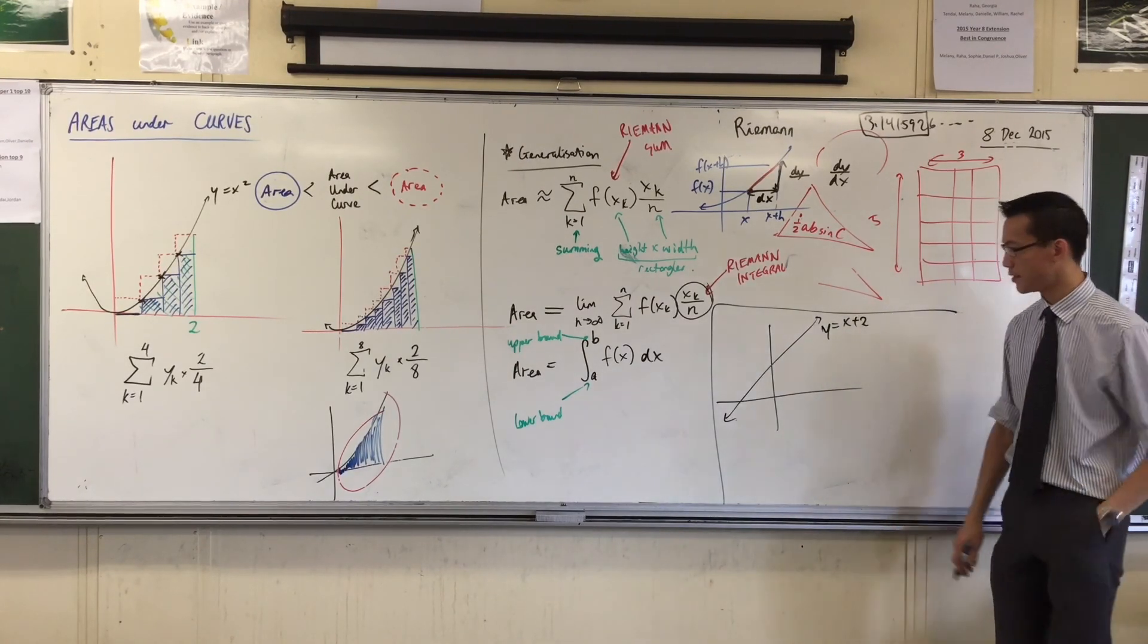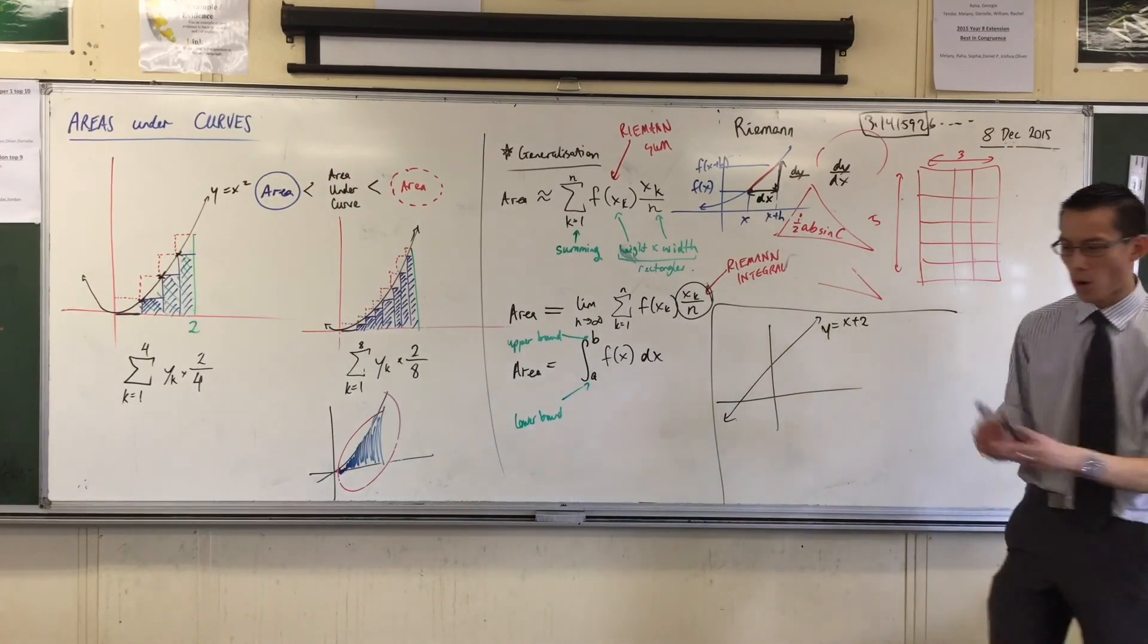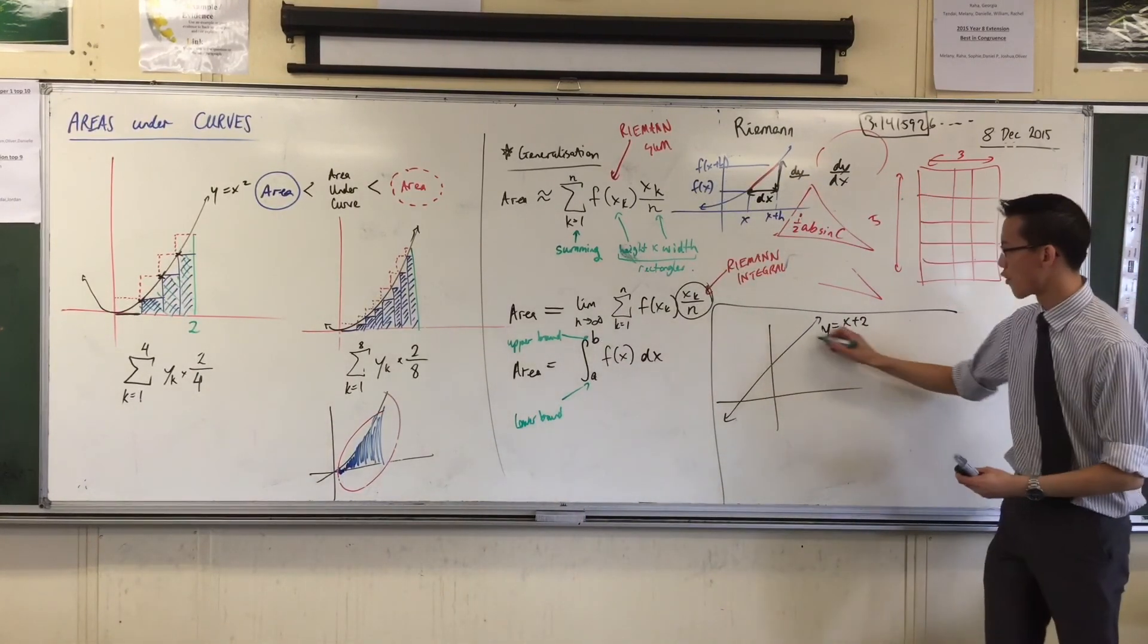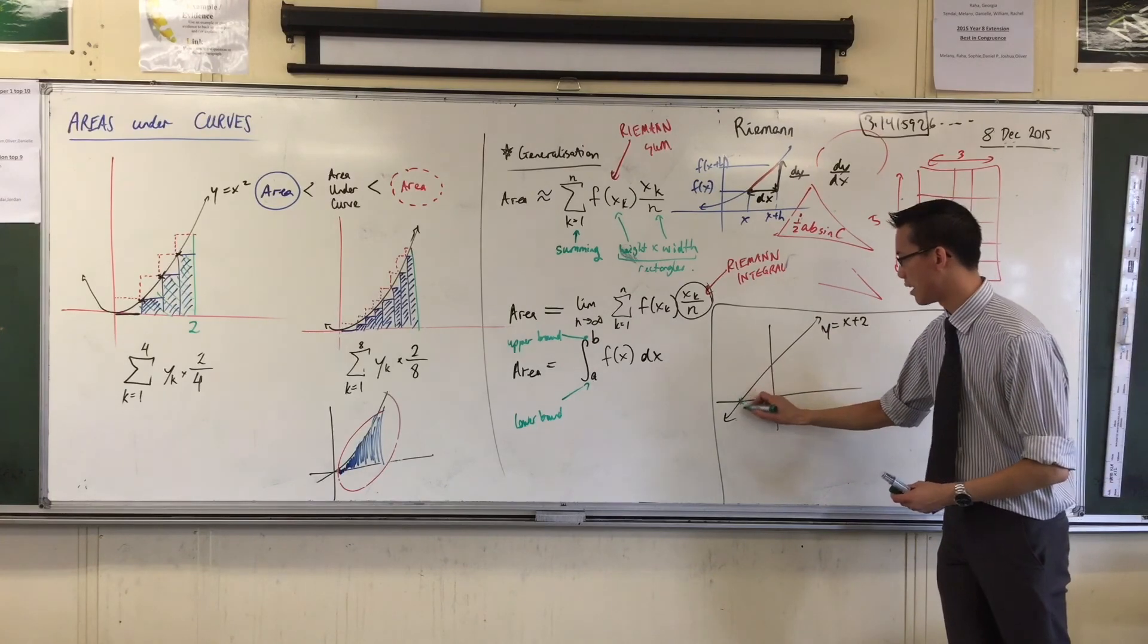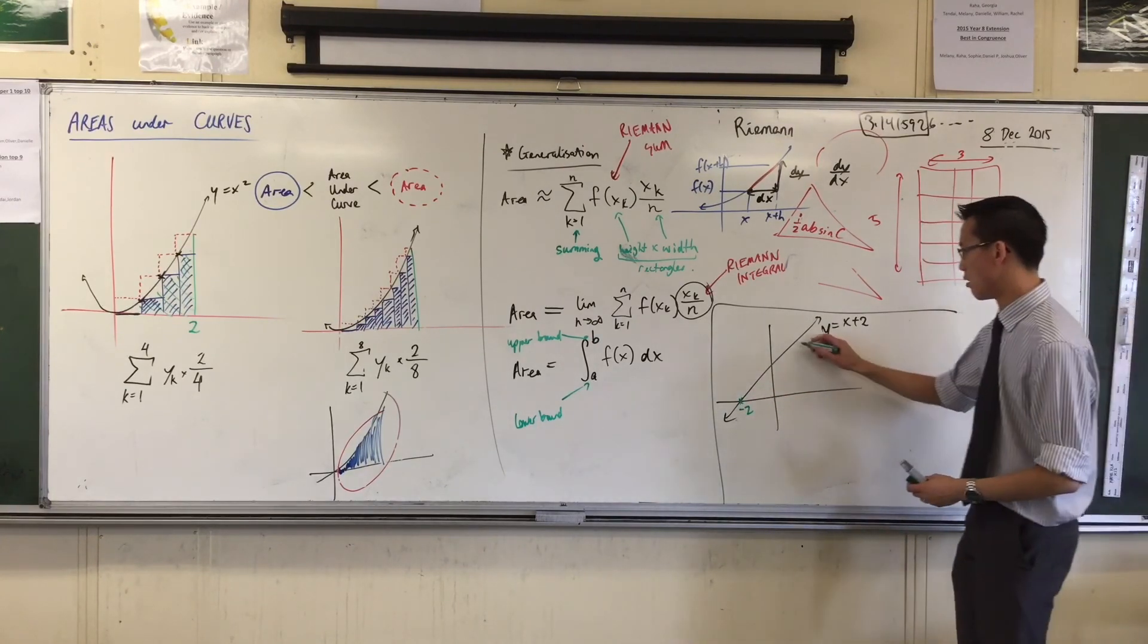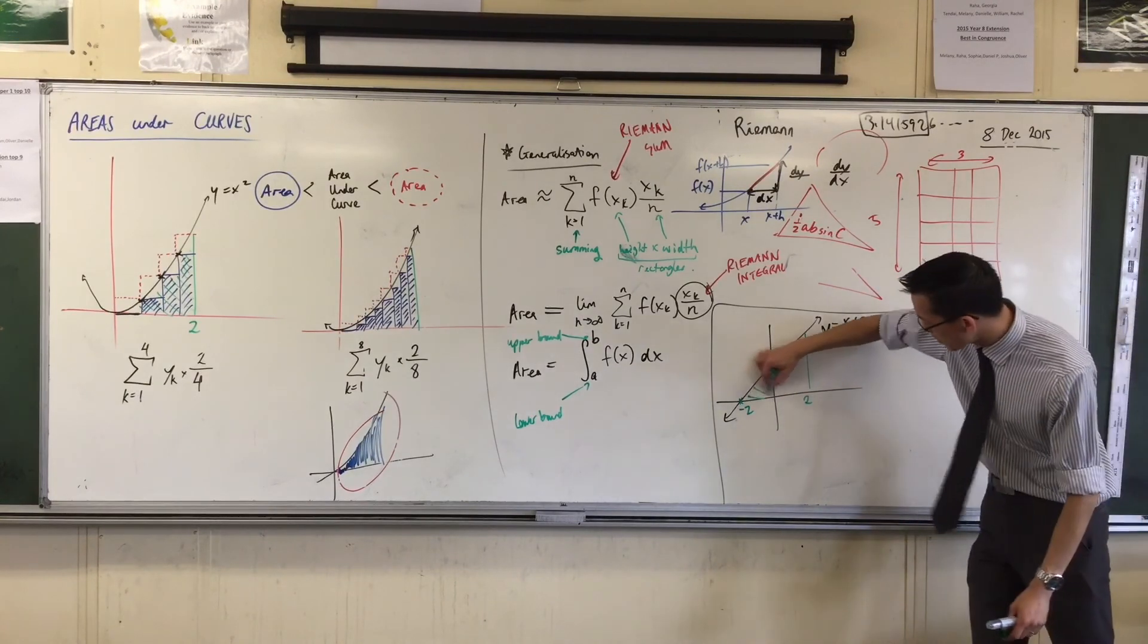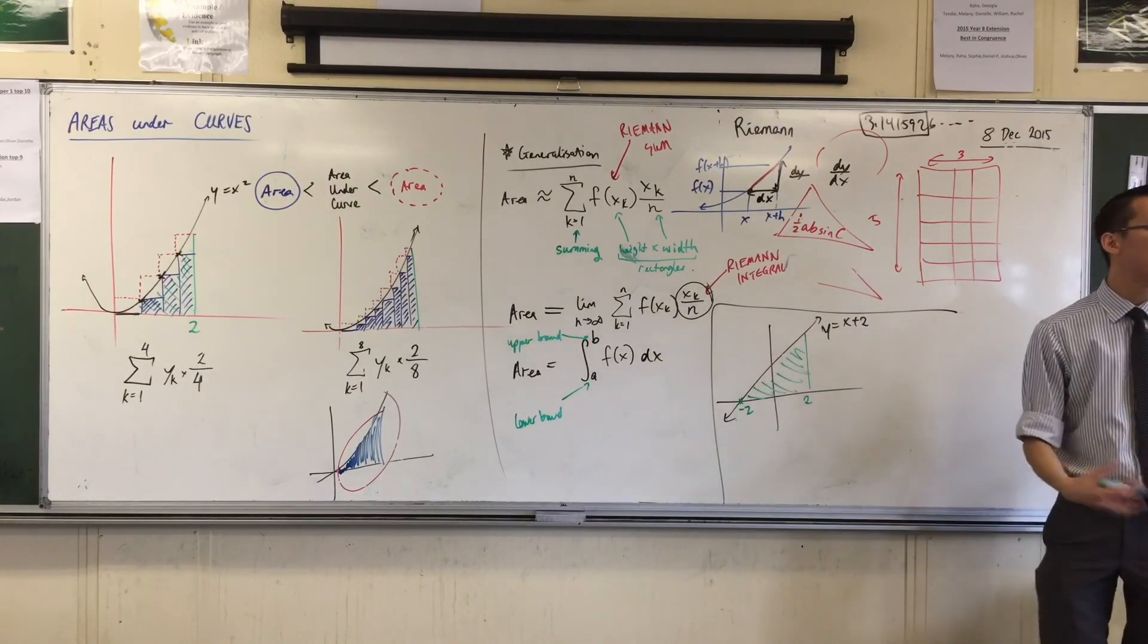Okay, here's a simple graph, and I can say, well okay, look, let's pick an area. Let's say go from over here, that's going to be negative 2, all the way up until say 2. And I say, well what's this area? This area under a curve, right?